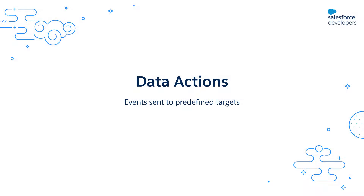Data actions are nothing but events that are sent by Data Cloud to predefined targets whenever certain conditions are met. These targets can then use these events to trigger their own downstream business processes.